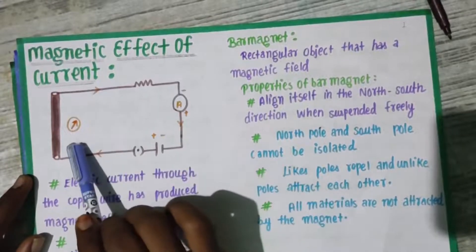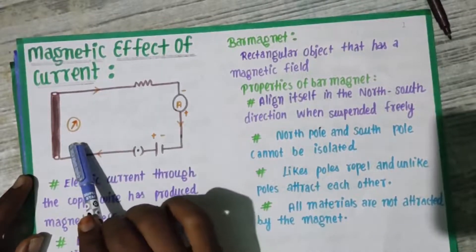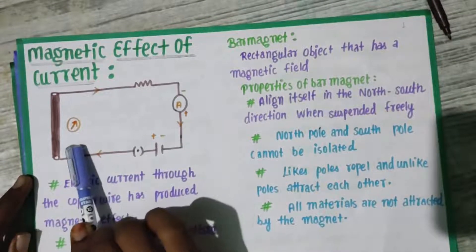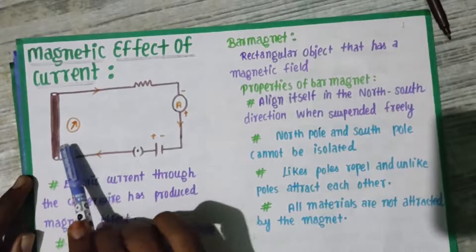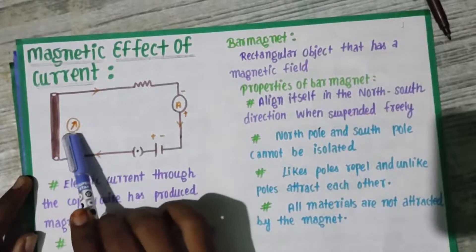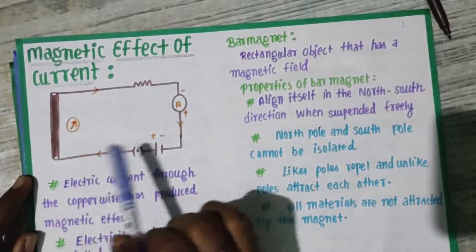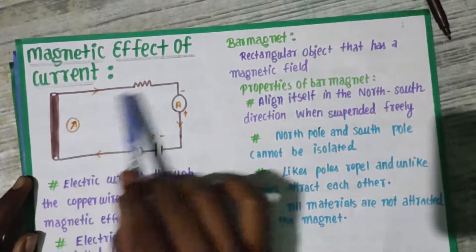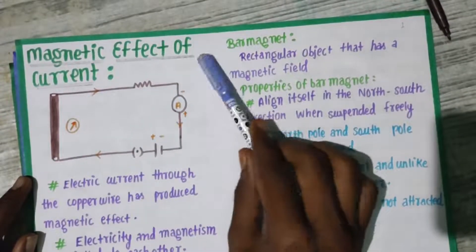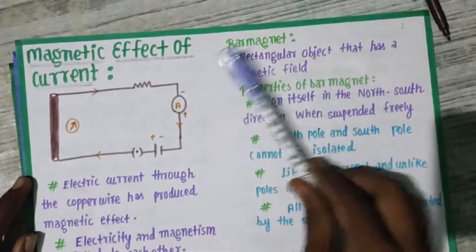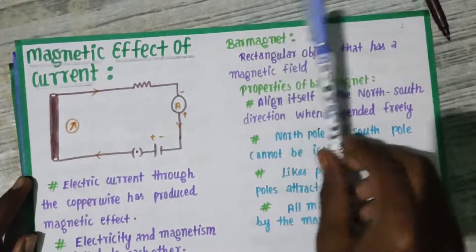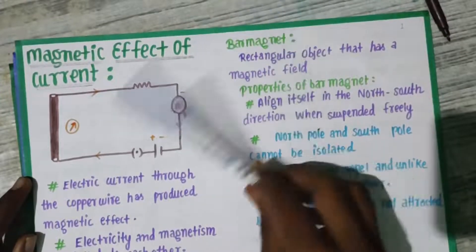The other component is a magnetic compass. The magnetic compass has a needle, and when the current passes, the needle starts to deflect.